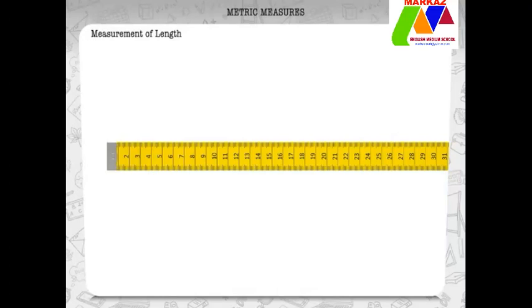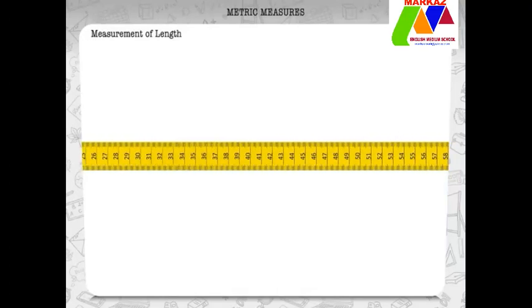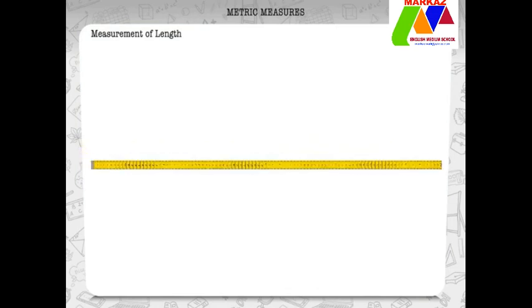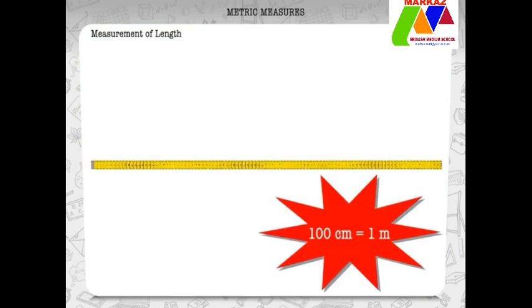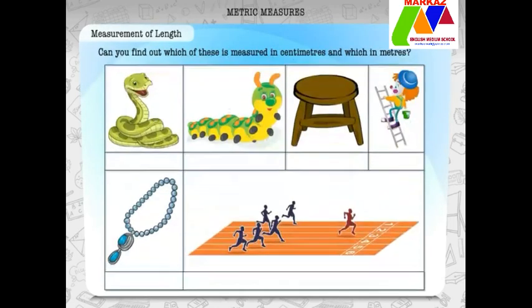Take a look at this meter scale. It has centimeter markings from 0 to 100. That means 100 centimeters is equal to 1 meter. Can you find out which of these is measured in centimeters and which in meters?